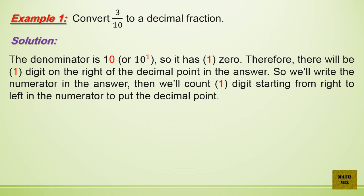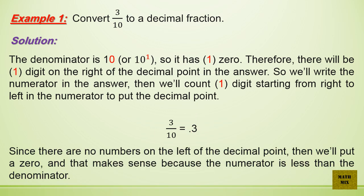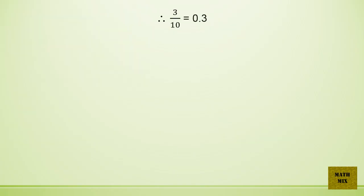Example 1: Convert 3 over 10 to a decimal fraction. The denominator is 10, or 10 to the power of 1, so it has 1 zero. Therefore, there will be one digit on the right of the decimal point in the answer. We write the numerator, then count one digit from right to left to place the decimal point. Since there are no numbers on the left of the decimal point, we put a 0. Therefore, 3 over 10 equals 0.3.